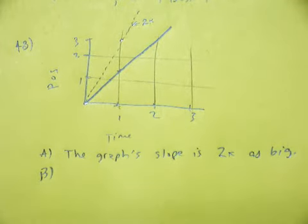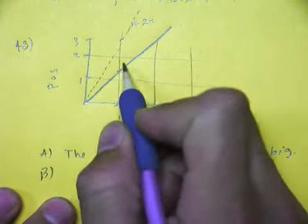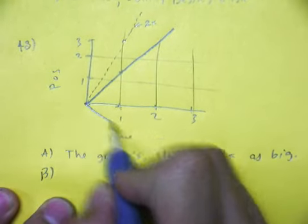Part B says describe how this graph would be different if the rabbit ran in the opposite direction. And so instead of running in the positive direction it's going to run in the negative direction, so it's going to look like this.